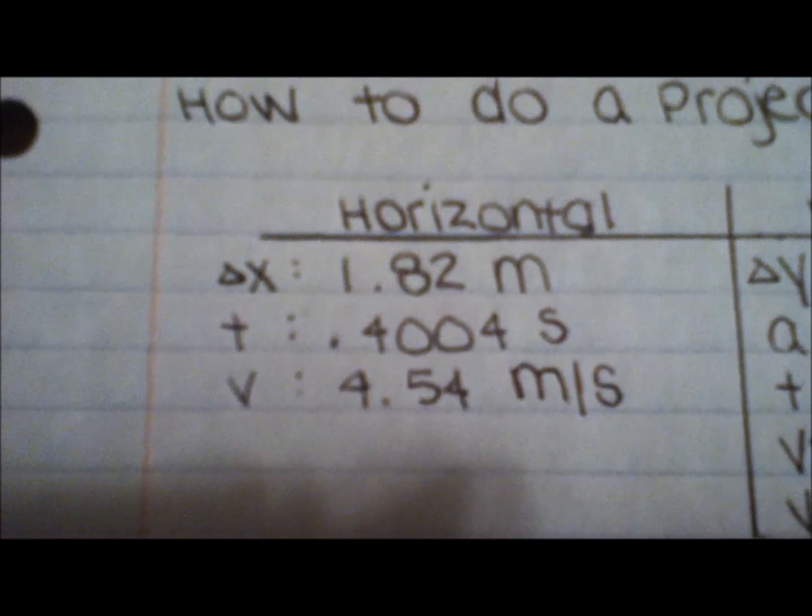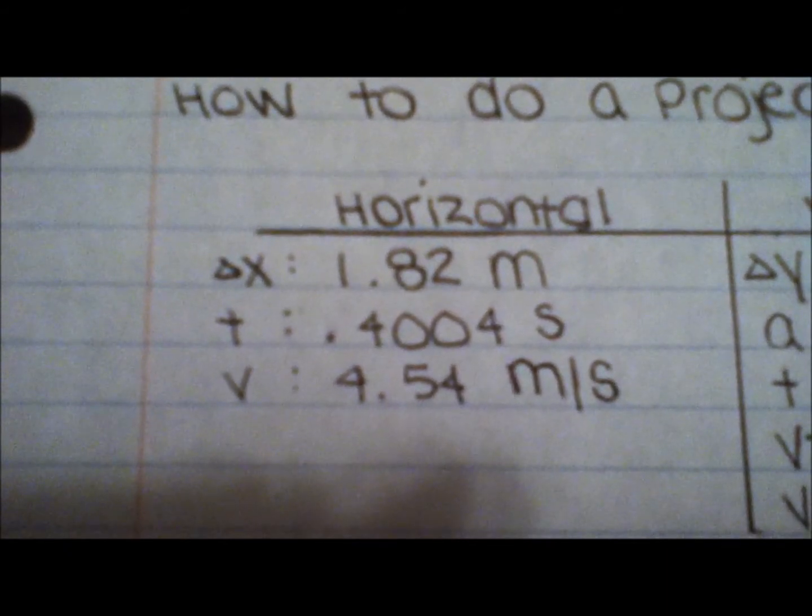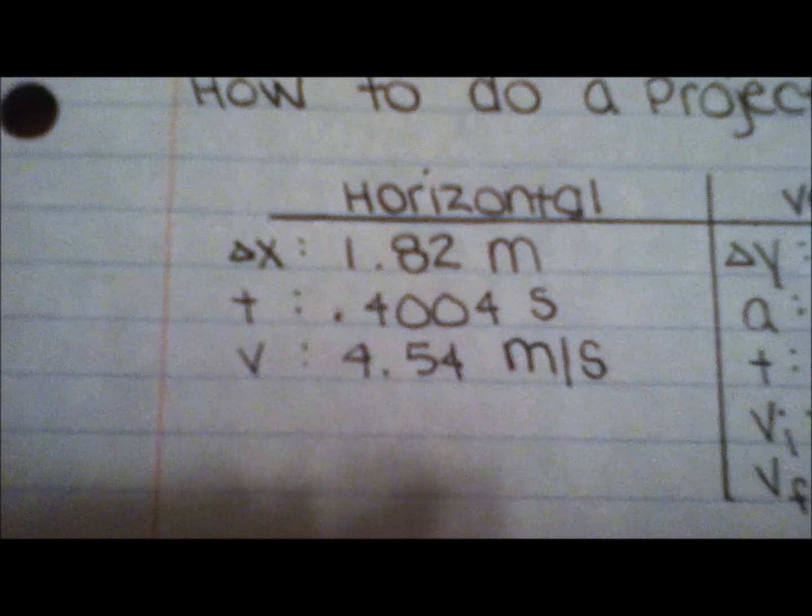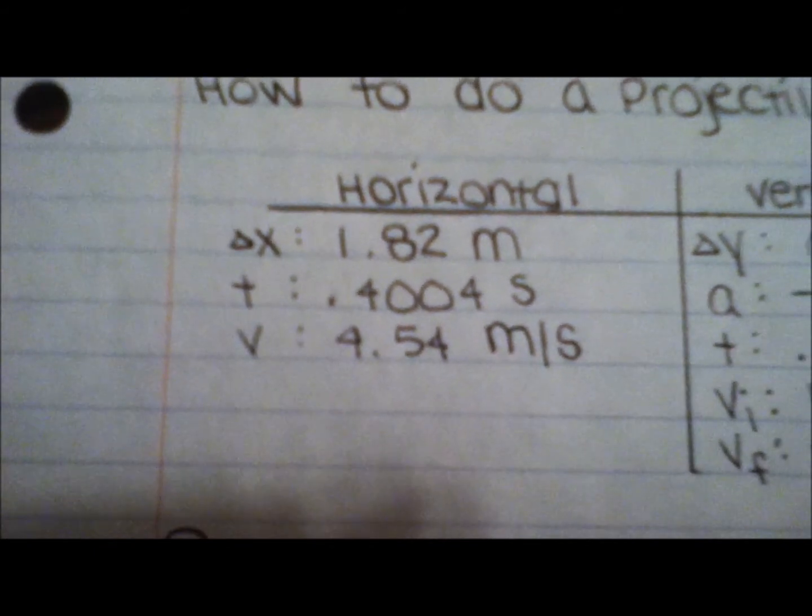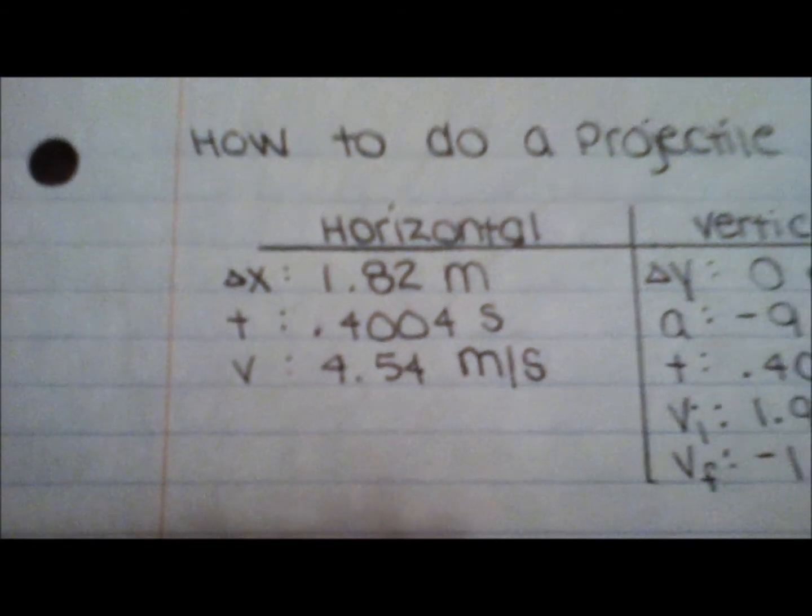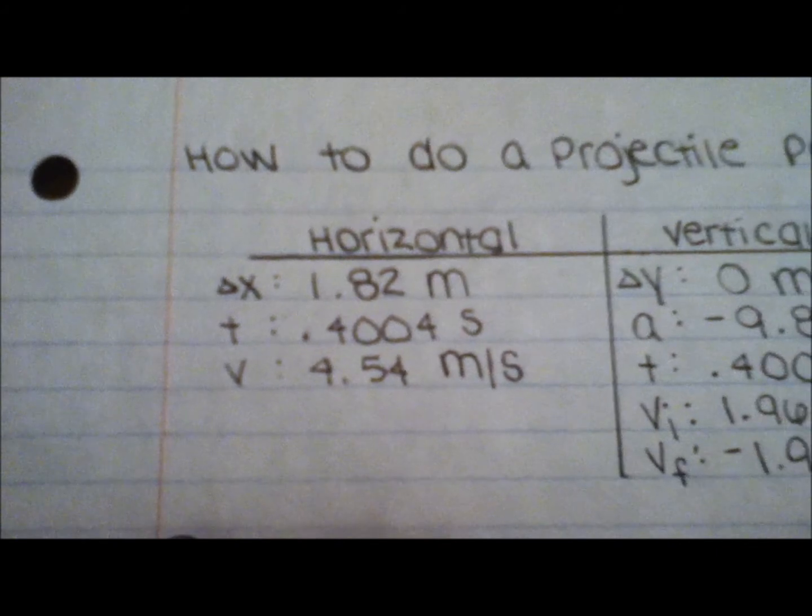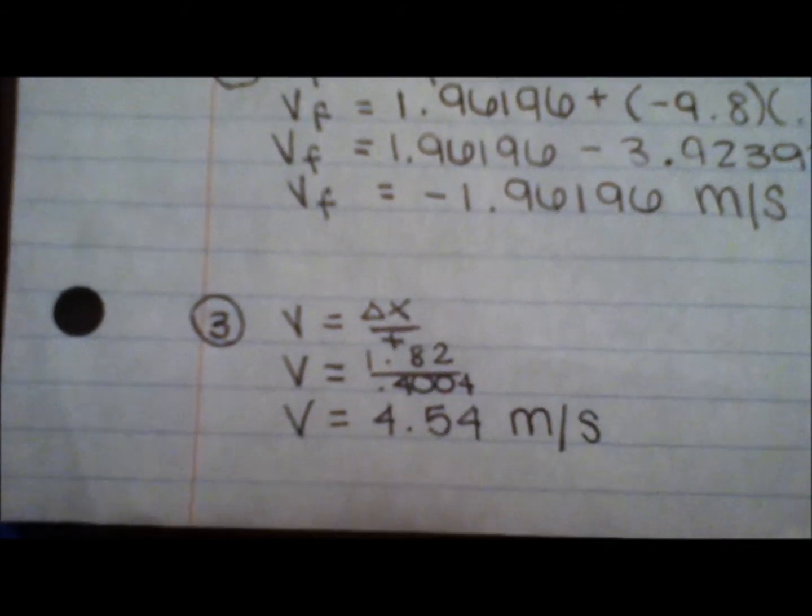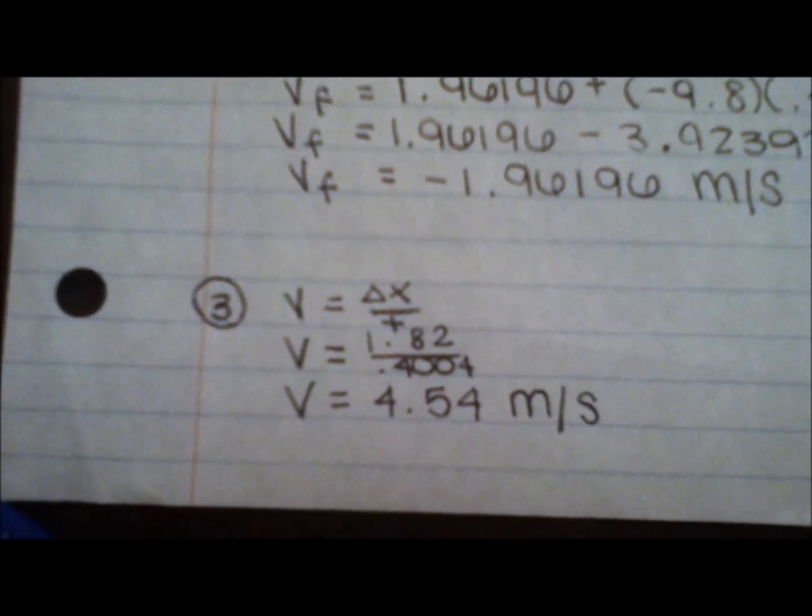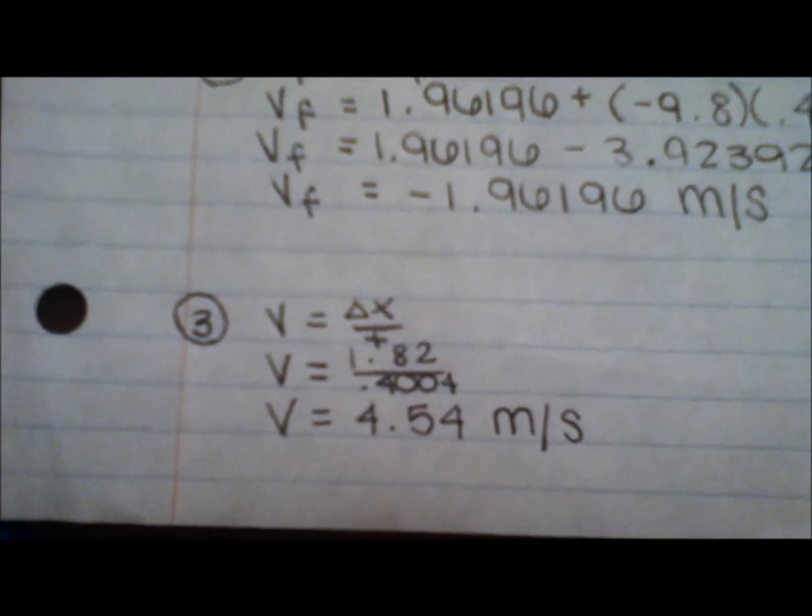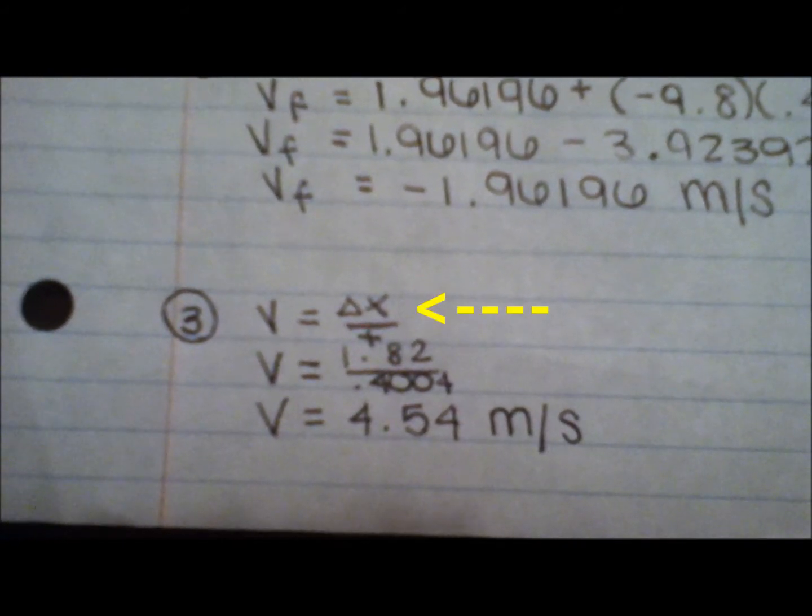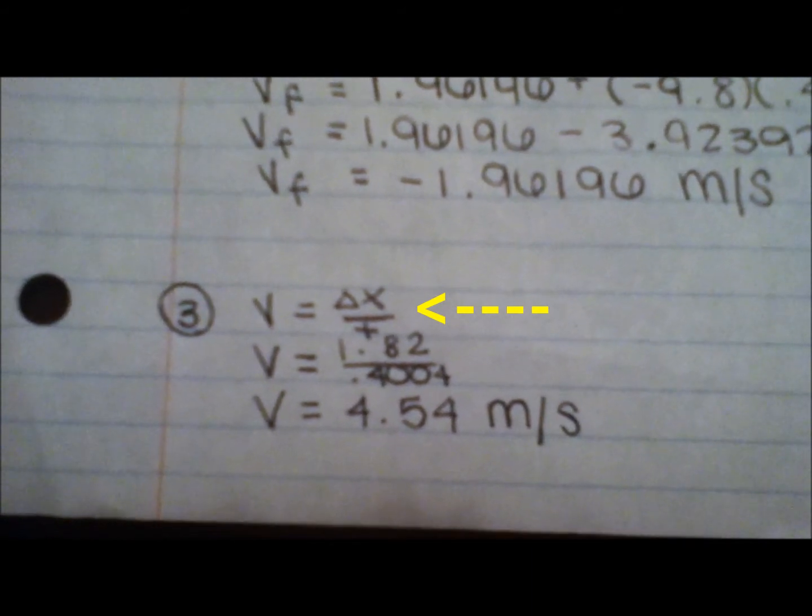so you simply take the time you found on the vertical motion side of the chart and fill it in on the horizontal motion side, as the dive roll will occur in the same amount of time, no matter what type of motion we focus on. So, substitute delta x and t into the one and only constant speed equation, v equals delta x over t.